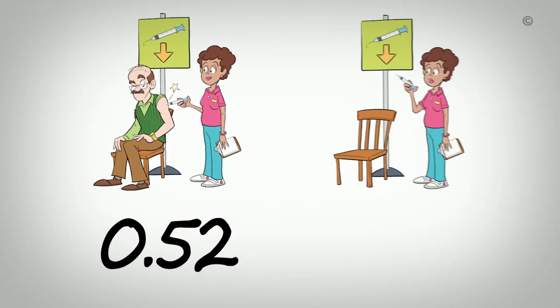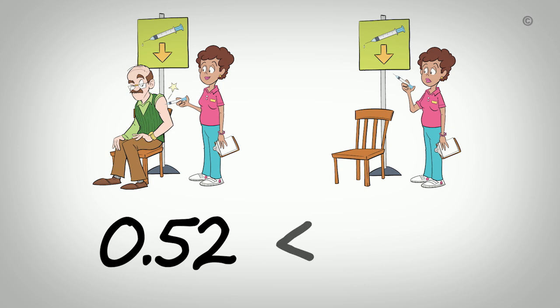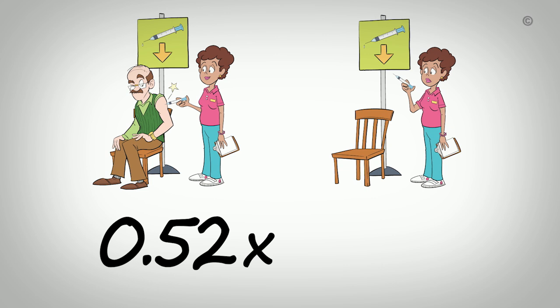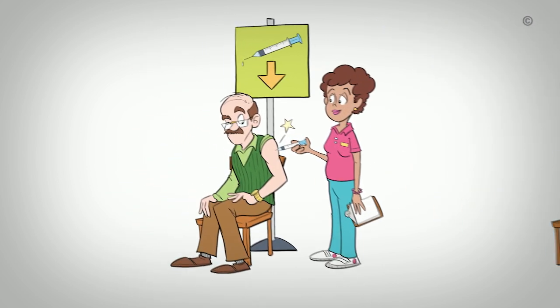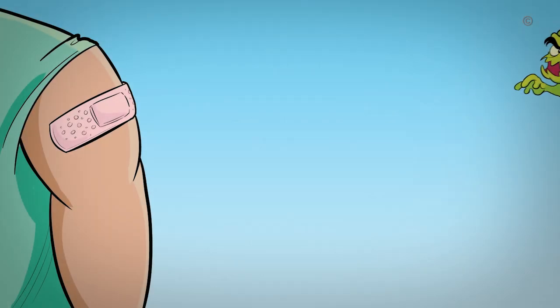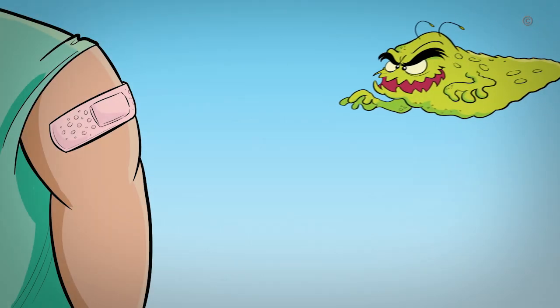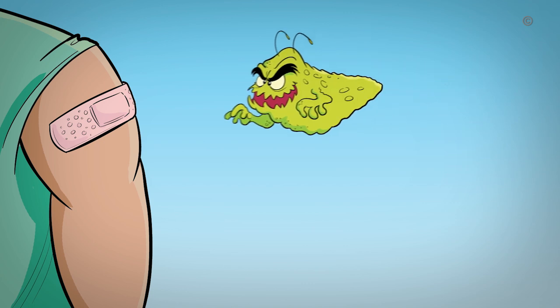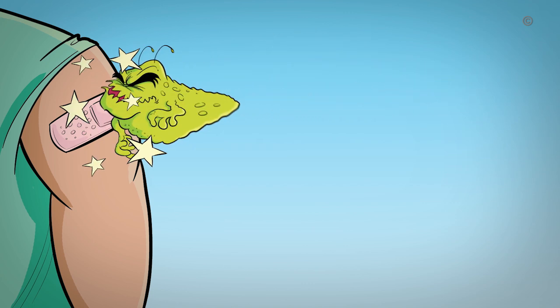We said earlier that an OR of 1 means there is no difference between the intervention and control groups. In our last example, the OR of 0.52 is less than 1, about half. Meaning the odds of getting the flu after having the shot are about half of what they are for those who didn't get the shot. In this instance, having an OR less than 1 is a positive outcome. So, in this instance, we conclude that getting the flu shot is an effective way to avoid getting the flu.